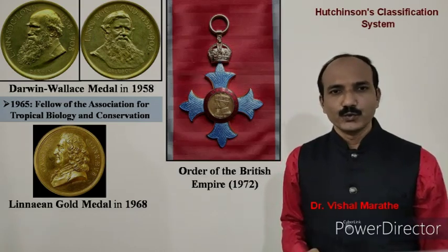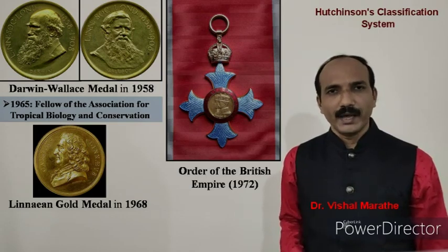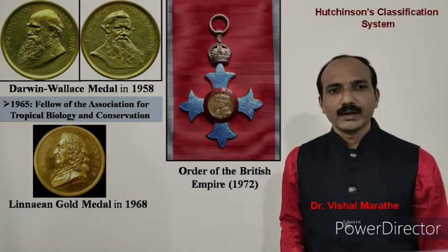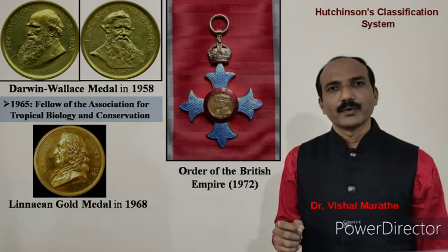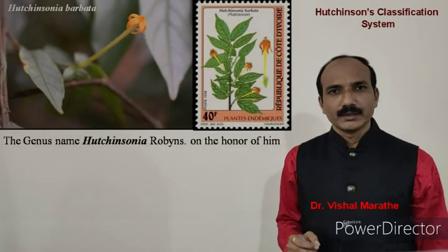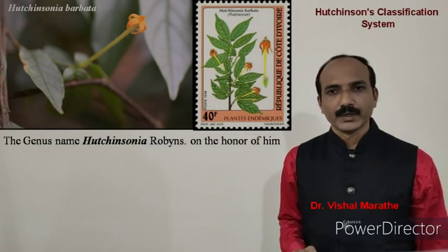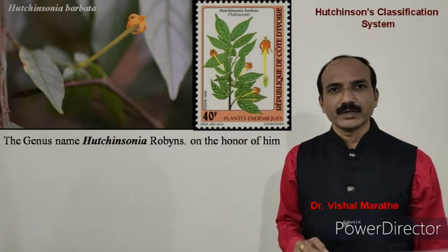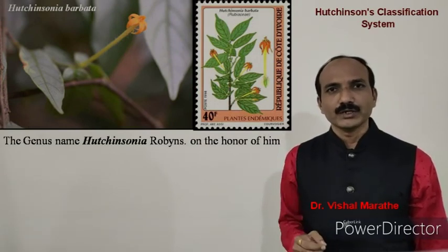In 1972, John Hutchinson was awarded the Order of the British Empire, a tribute to one who had devoted his entire life to British botany. Another important honor is that the name of the genus Hutchinsonia was given in his honor. These are the various awards and honors conferred upon John Hutchinson.